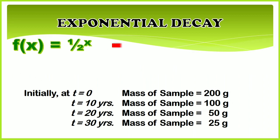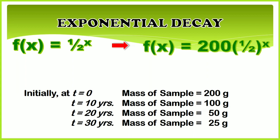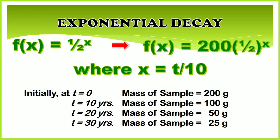Because the scenario is described as half-life, the base of the exponential function is one-half, and the exponent is x. Since the mass of the sample is initially 200 grams, then 200 is the coefficient of the base (1/2)^x, where x is equal to the time divided by 10. This is due to the decay of half of the sample which occurs after every 10 years.